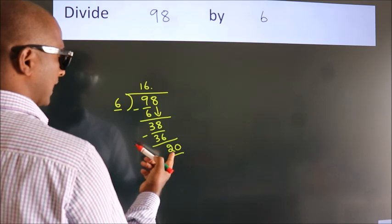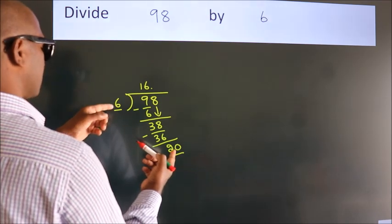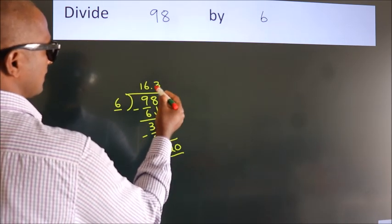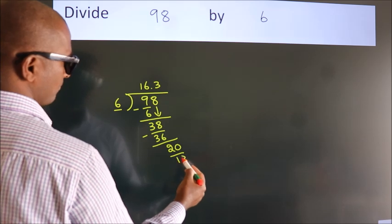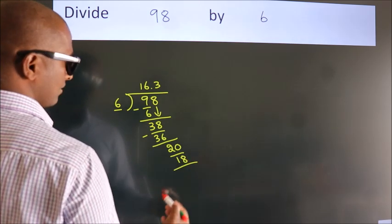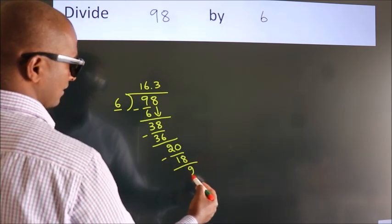A number close to 20 in the 6 table is 6 times 3, which is 18. Now we subtract and get 2.